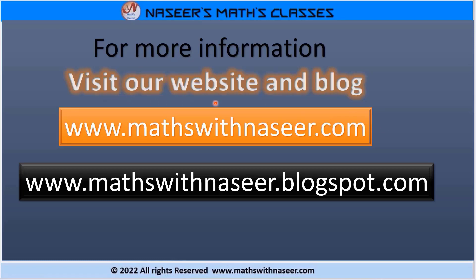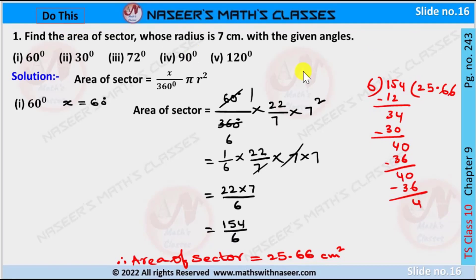For more information, visit our website and blog www.mathswithnaseer.com and www.mathswithnaseerblogspot.com. Now we are going to follow page number 243, chapter 9: find the area of a sector whose radius is 7 centimeters with the given angles. The first angle given is 60 degrees. We already know the area of the sector is equal to x by 360 into pi r squared.